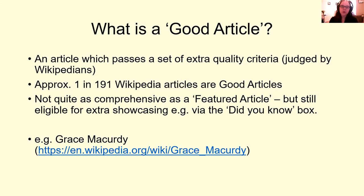Approximately one in 191 Wikipedia articles are good articles, so it doesn't apply to all articles on the site. They are usually not quite as comprehensive as the real gold star articles — these are featured articles on Wikipedia. So you can have normal articles, you can have good articles, and then if your article is really good, you can go for featured article status. Good articles are a level below that.